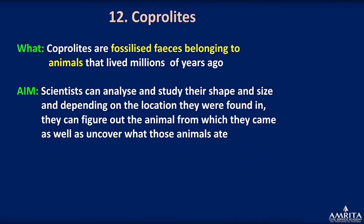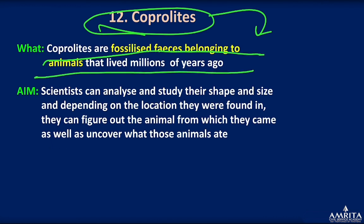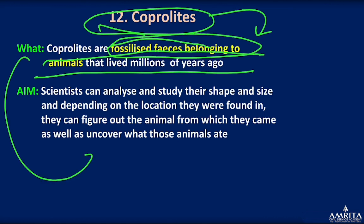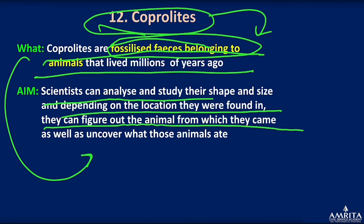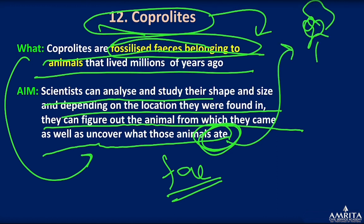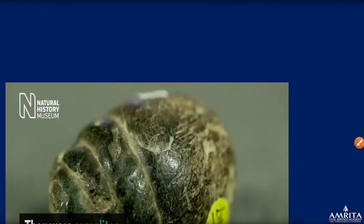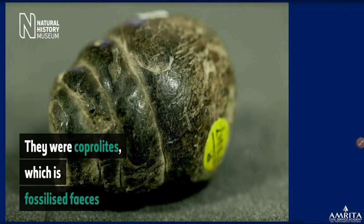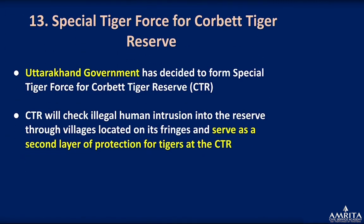Next is coprolites. Coprolites are fossil feces belonging to animals that lived millions of years ago. Scientists can analyze their shape and size and, depending on the location where they are found, can determine the animal they came from. They can also uncover what those animals ate, and even get an idea of the types of plants and different species present in that region at the time.